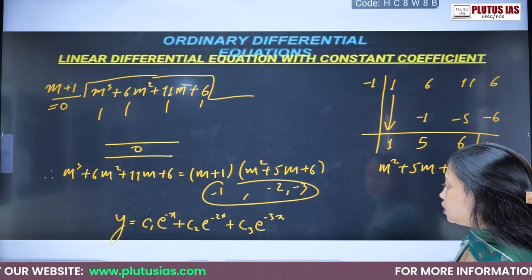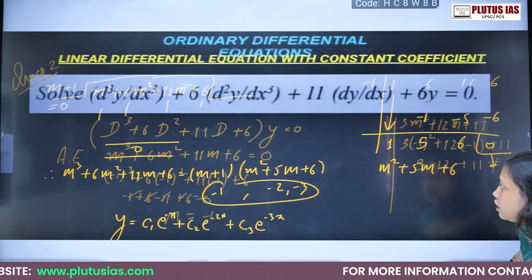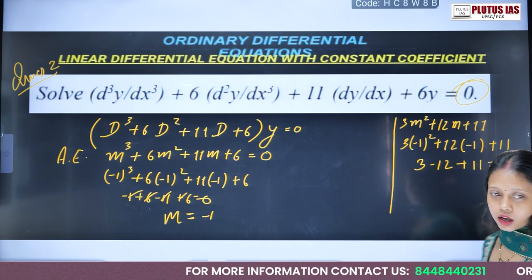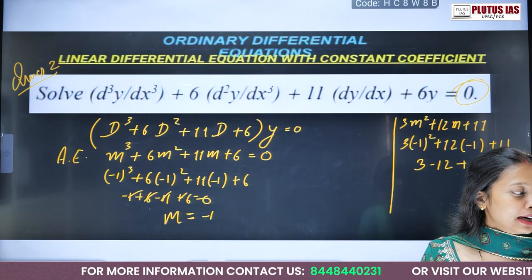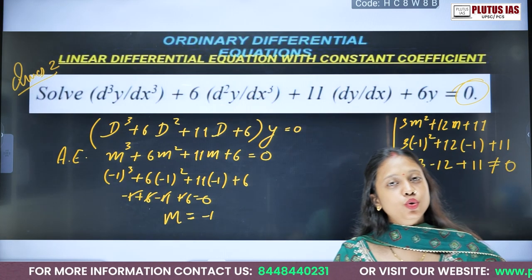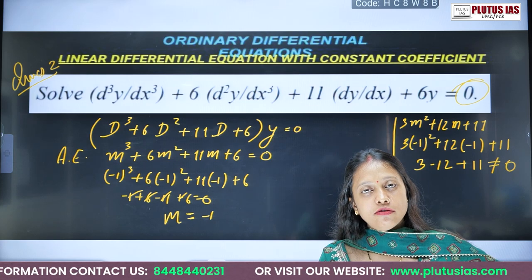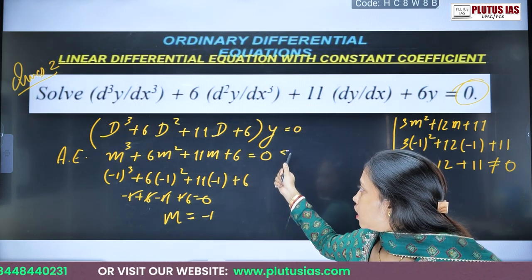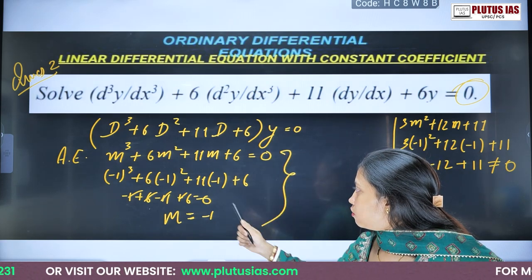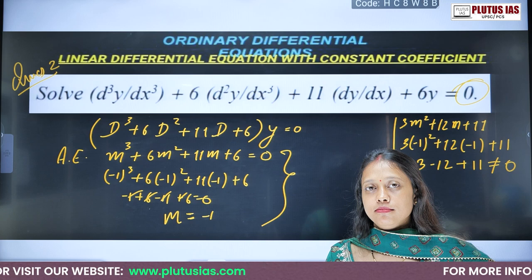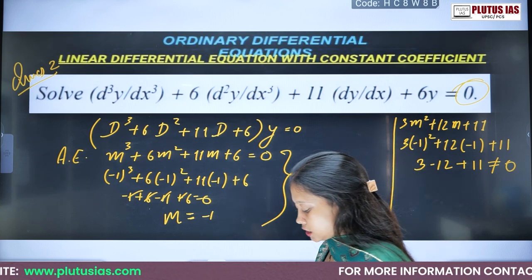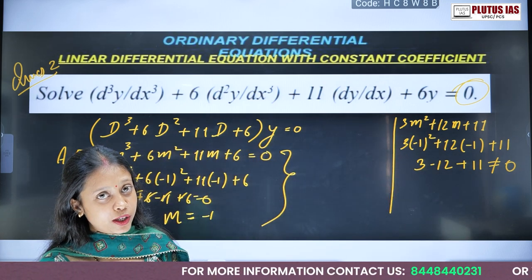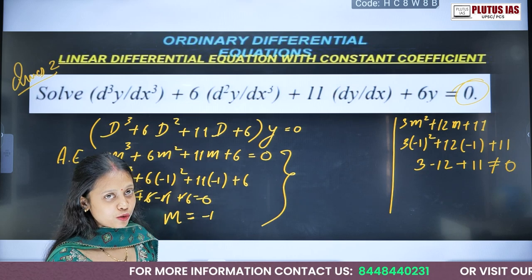So I hope the use of the table is very clear and finding the CF is easy — you just have to solve the auxiliary equation. That's it for today. In the next lecture, we'll discuss particular integrals as well. Thank you so much, everyone.